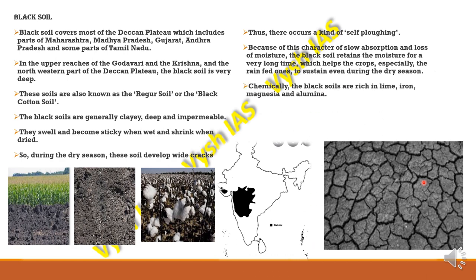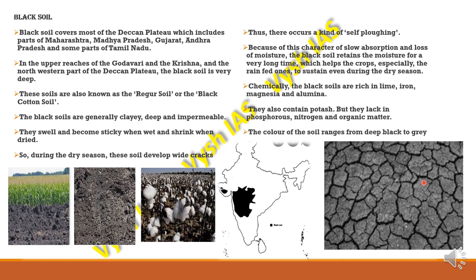Chemically, black soils are very rich in lime, iron, magnesia, and alumina. They also contain potash, but they lack in phosphorus, nitrogen, and organic matter. The colour of the soil ranges from deep black to grey.